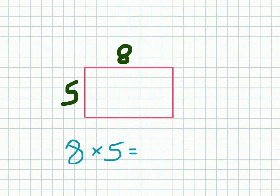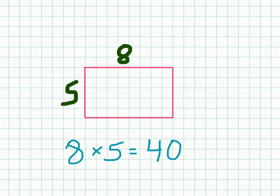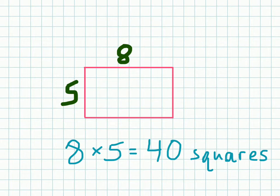Think about that for a second — the answer is going to be 40, and the unit here is squares. If you really want to check and count, every square here is going to be 40 squares. But the multiplication is a shortcut to figure out the area.